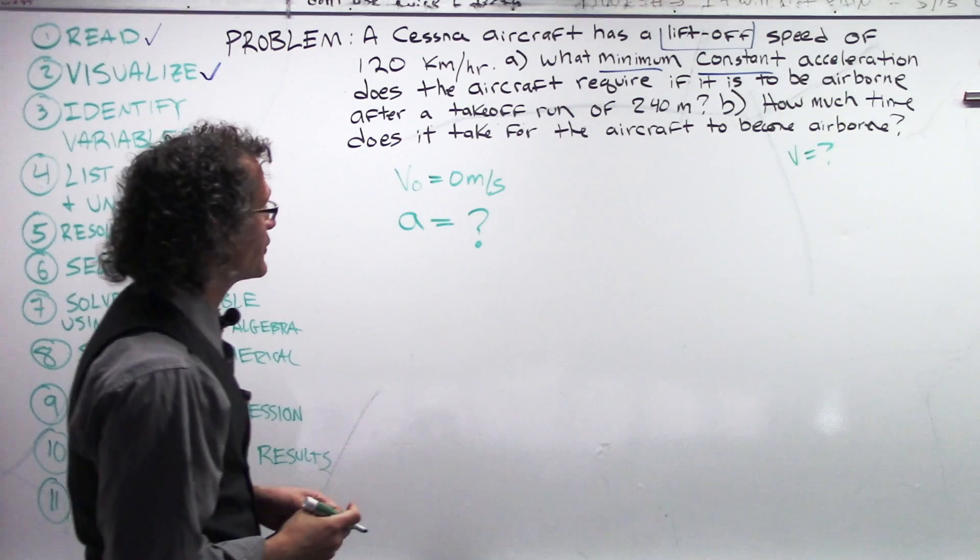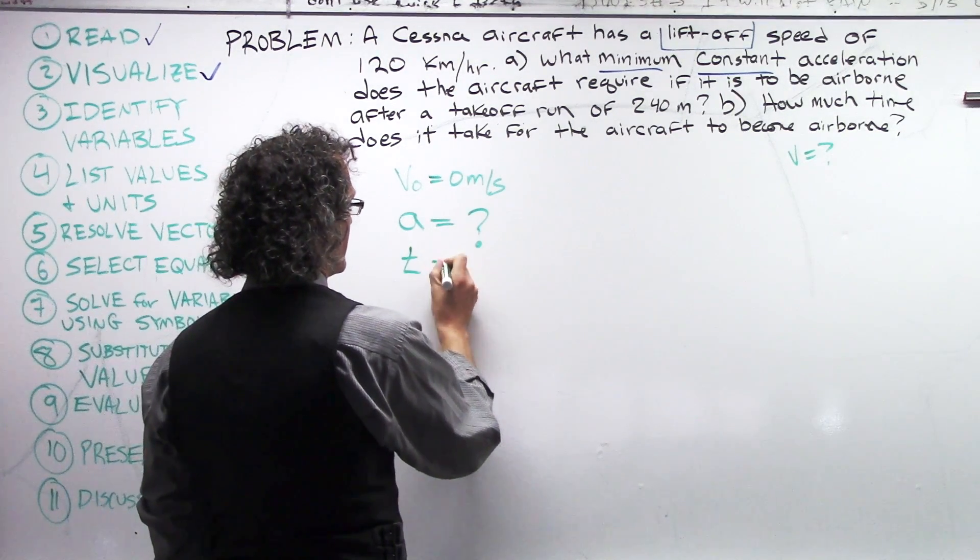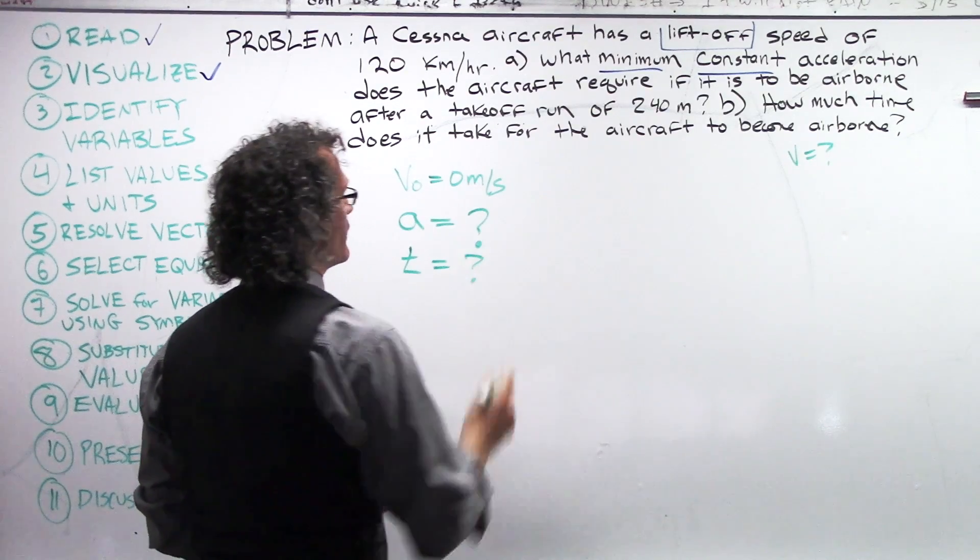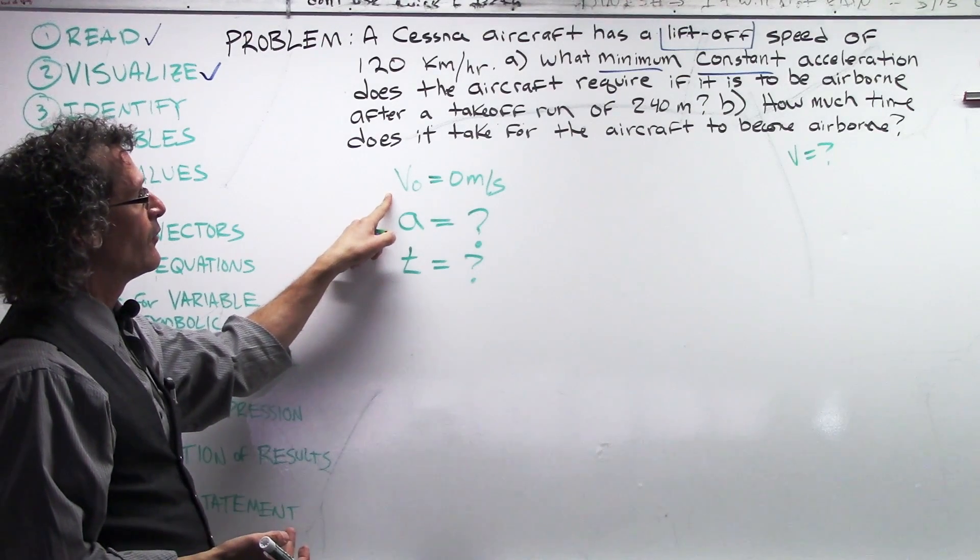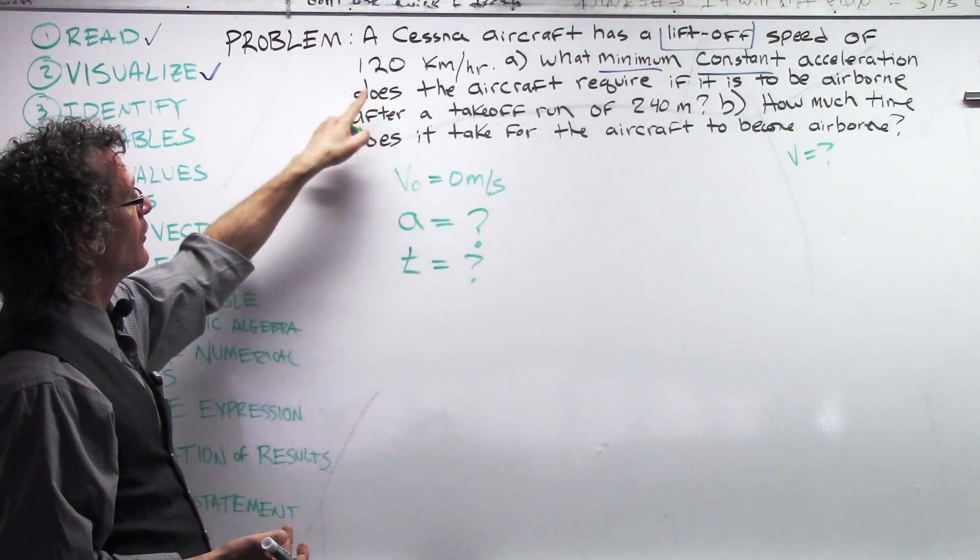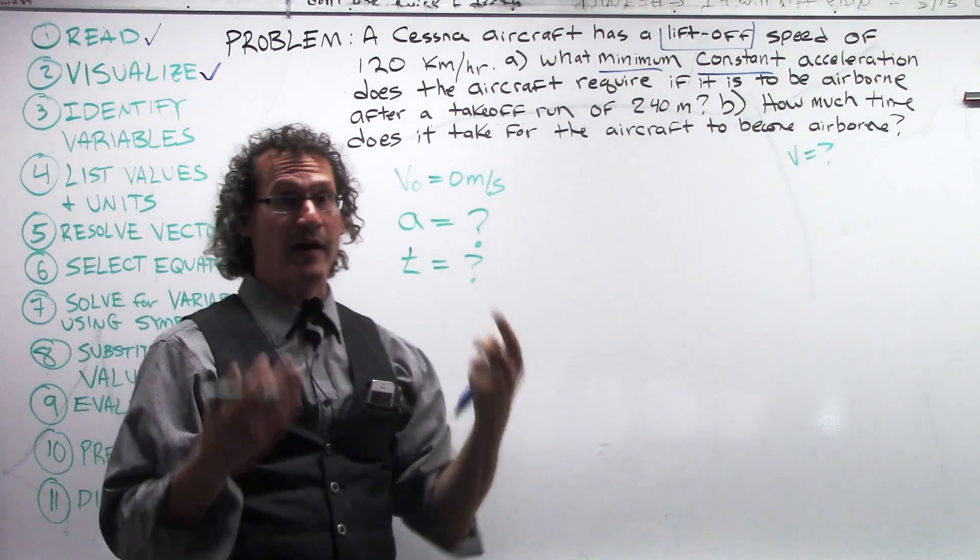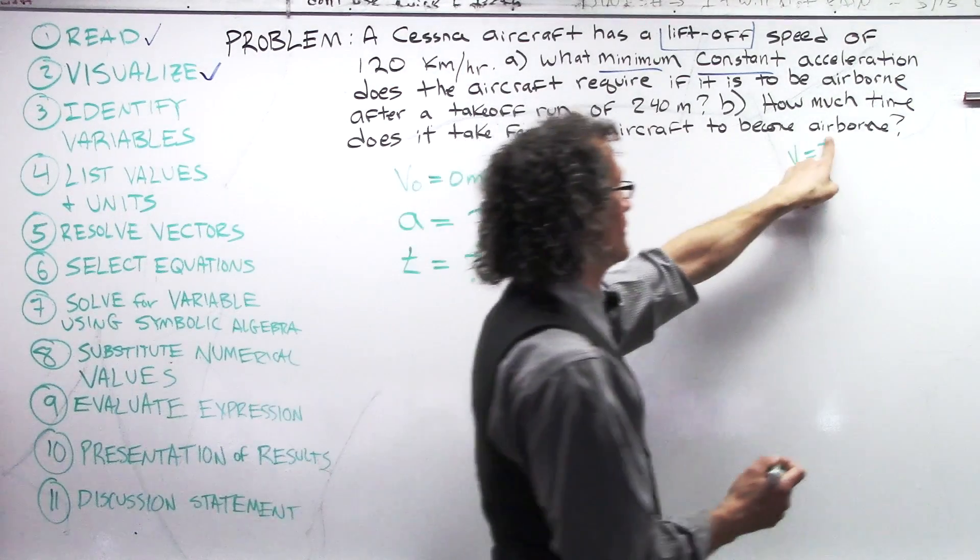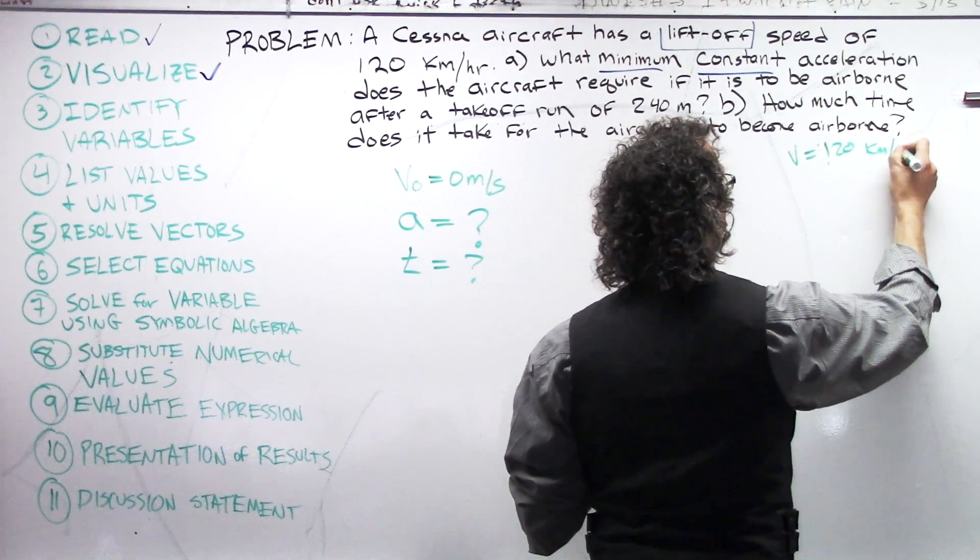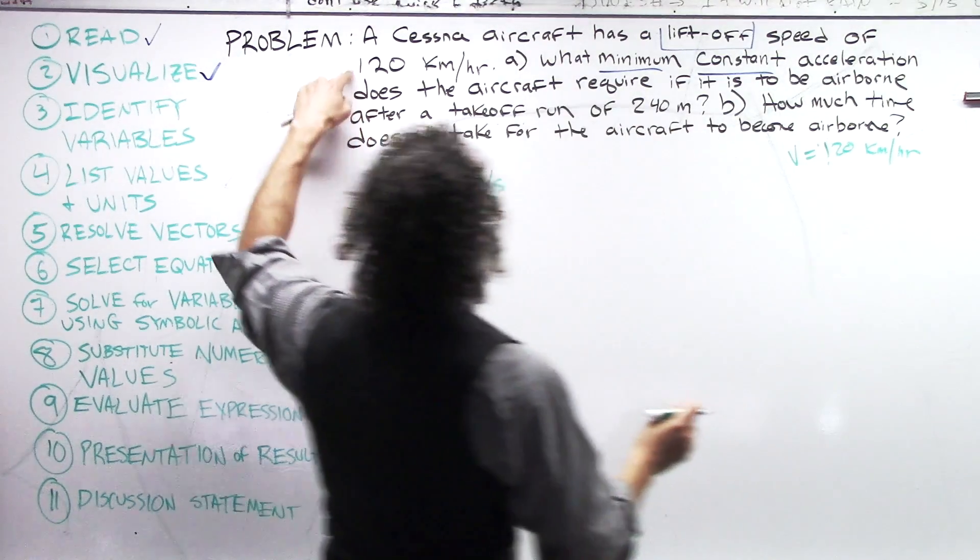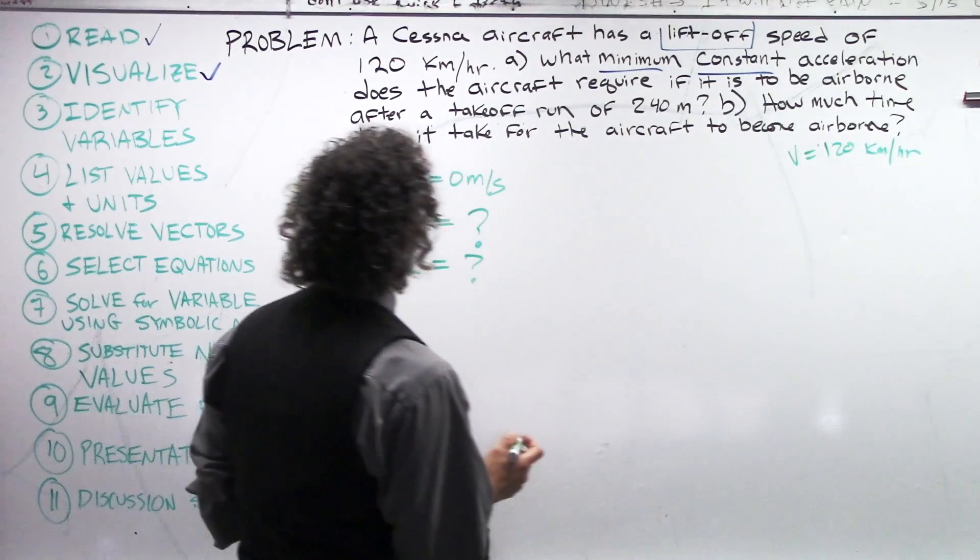And in part B, how much time does it take for the aircraft to become airborne? That is T. We don't know the time. What we're also looking at here is a liftoff speed. That is given to us. That will be the final velocity. Actually, this isn't a question mark. That guy should have been 120 kilometers per hour. When I was looking, it was in glare. So, I didn't see it. My apologies. But here we go. The V is 120 kilometers per hour.